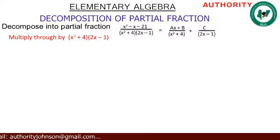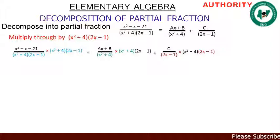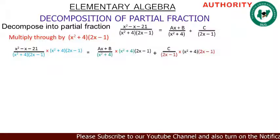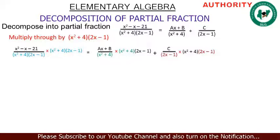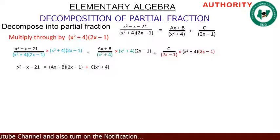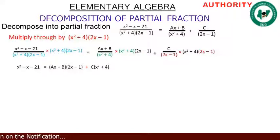Now we're going to multiply everything through by (x squared plus 4)(2x minus 1). On the left-hand side, x squared plus 4 cancels with x squared plus 4, and 2x minus 1 cancels with 2x minus 1, so on the left-hand side we're left with x squared minus x minus 21. On the right-hand side, for the ax plus b term, x squared plus 4 cancels, leaving ax plus b times (2x minus 1).